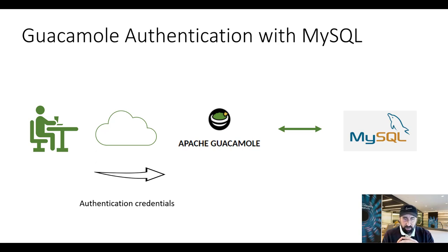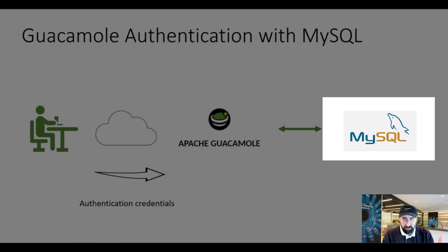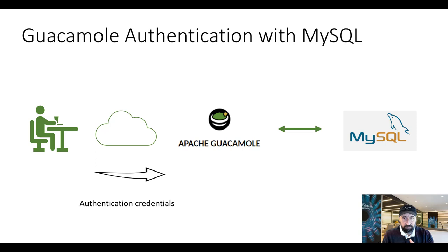In this specific case, we are going to show you how to use database authentication, and the specific database type I'll be using is MySQL. The Guacamole server will take the request from the user and pass those details to a SQL database backend. The SQL database will be running on the same Guacamole server for this demo, and we'll compare these two authentication types. Let's make a start.